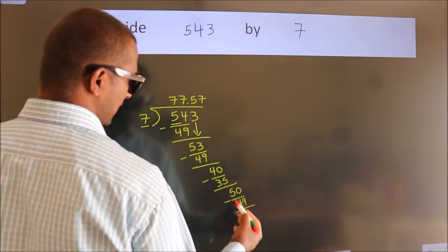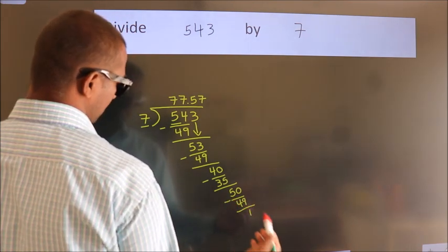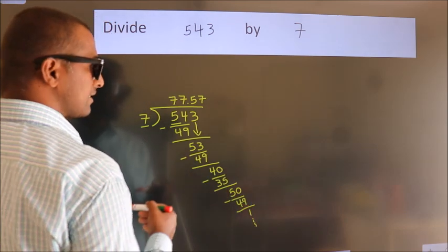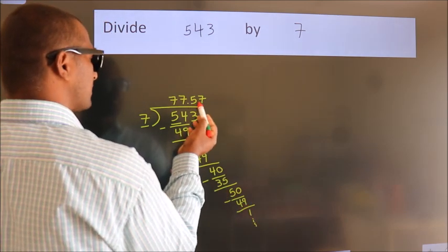Now we subtract and get 1, and the division continues. It is enough if we do up to 2 decimal places.